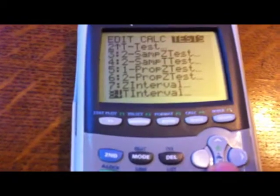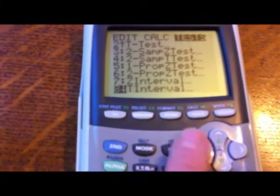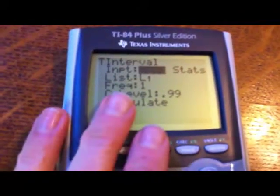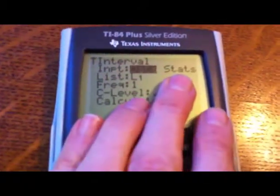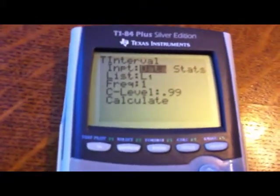And we are constructing a T confidence interval. So once you have the eight highlighted, you want to press enter. And that's where it gives you the option of either doing your interval from data or doing it from statistics. So we want to do it from data, so I'll keep it there. I can enter.